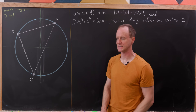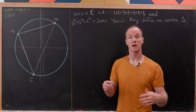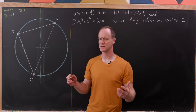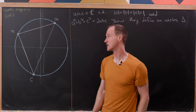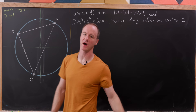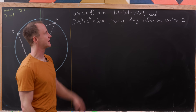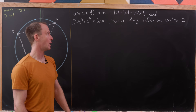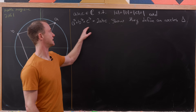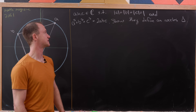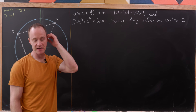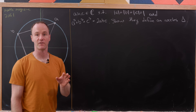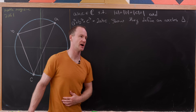Today we're looking at a pretty cool math magazine problem that combines complex numbers and geometry, and of course these ideas are pretty intimately connected naturally. We've got three complex numbers a, b, and c whose modulus is one and they satisfy the equation a³ + b³ + c³ = 2abc. Our goal is to show that these are the vertices of an isosceles triangle.